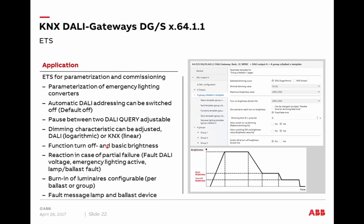The dimming characteristic or dimming curve can be adjusted as before. The standard is a logarithmic curve for smooth, even dimming for the human eye, but it can be changed to linear behavior in special cases. The turn-off brightness and basic brightness function is demonstrated with a staircase lighting diagram: the light switches on at a certain level, then dims down to a basic brightness warning level before going to a turn-off brightness rather than switching off completely. Such behavior is easily adjustable in the ETS.